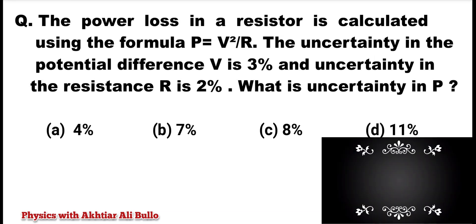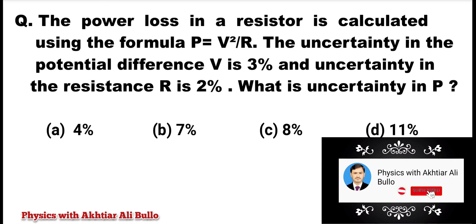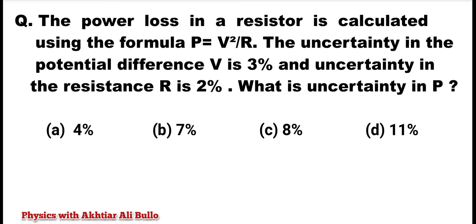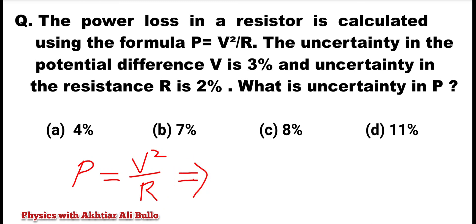The power loss in a resistor is calculated using the formula P = V² / R. The uncertainty in the potential difference V is 3% and the uncertainty in the resistance R is 2%. What is the uncertainty in P? Options: A) 4%, B) 7%, C) 8%, D) 11%. Given P = V² / R, we need to calculate the uncertainty in P.